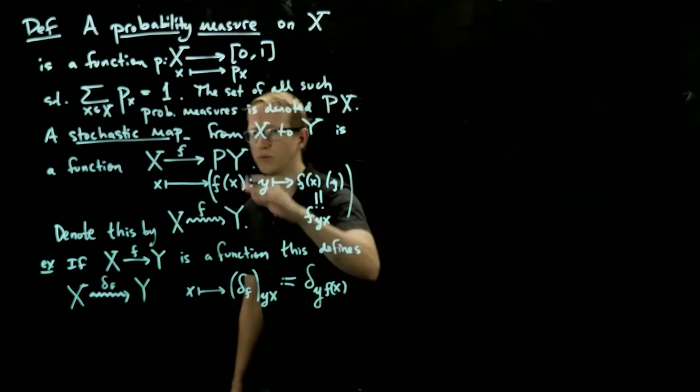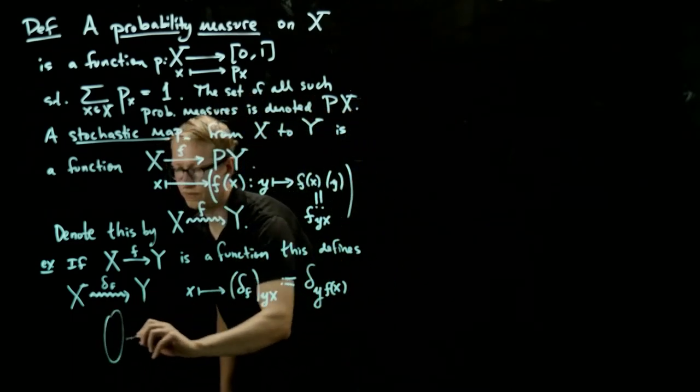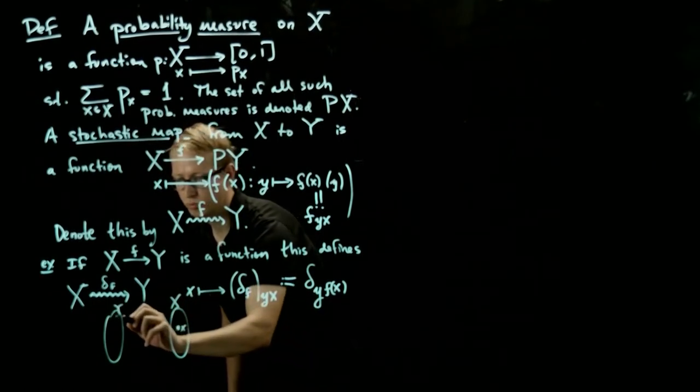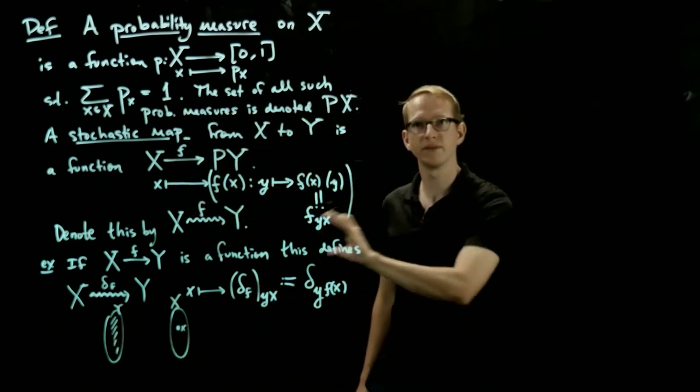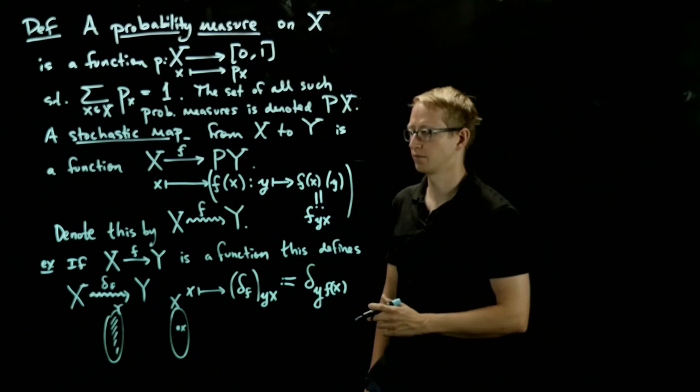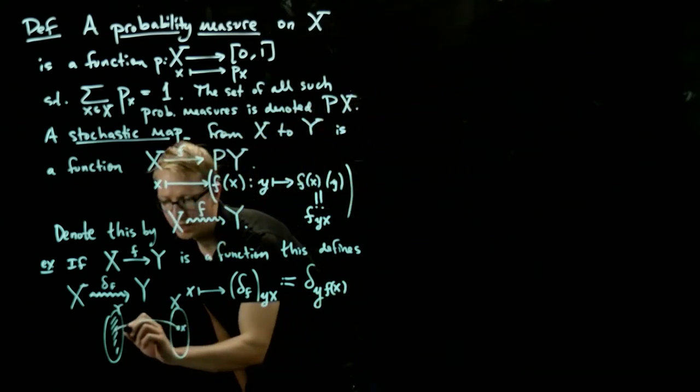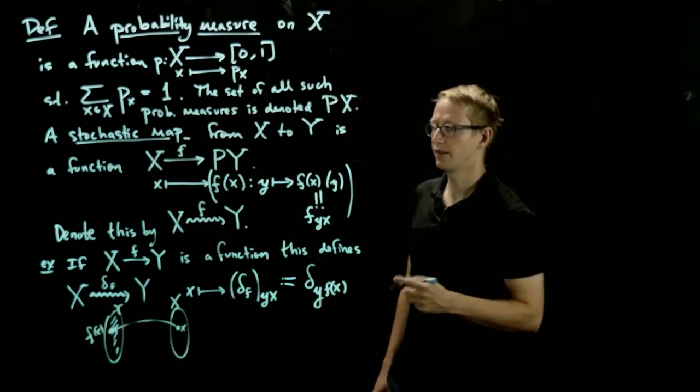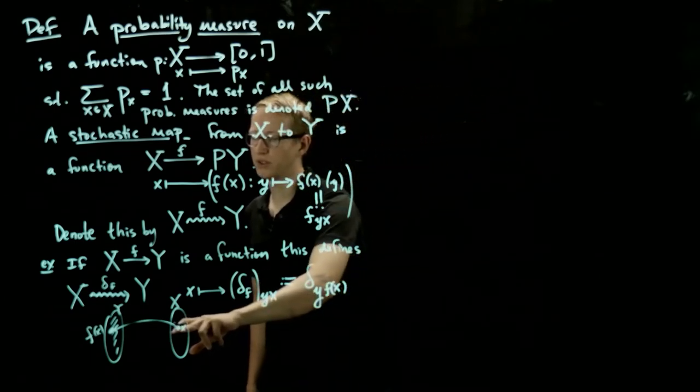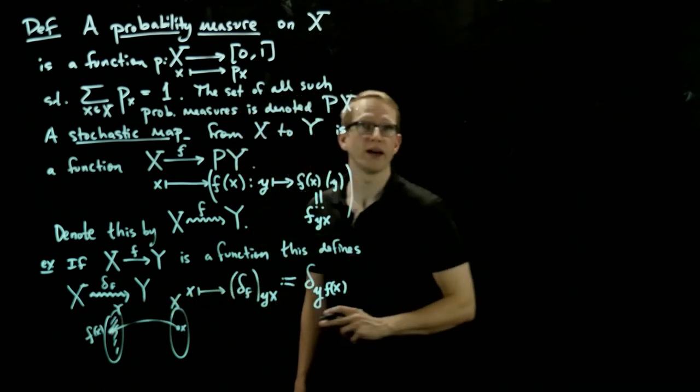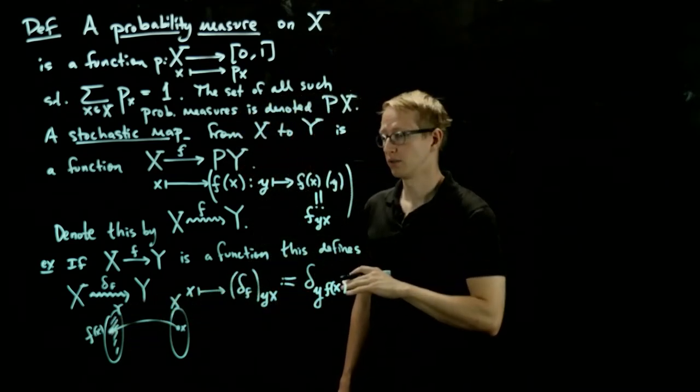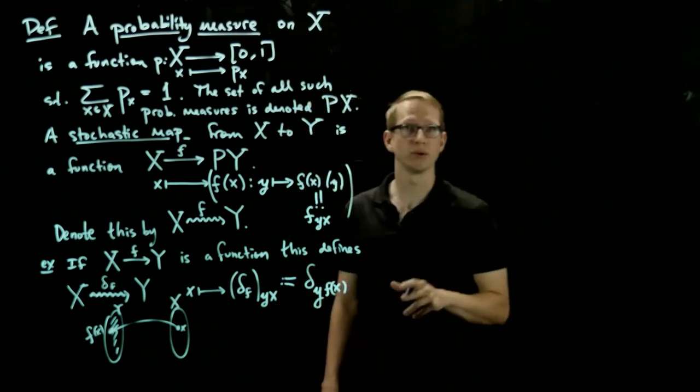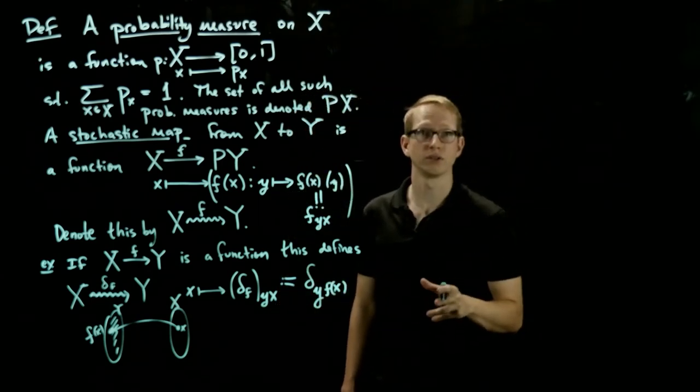So visually, how do I think of something like this? A stochastic map is telling us if we start off in x, then it takes an element in X and spreads that element out over Y by giving us a probability distribution on Y. But if we already have a function, then we know where that element x goes. It goes to a specific element, which we call f of x. Therefore, it does give us a probability distribution. That probability distribution is 1 when evaluated at f of x and 0 everywhere else. So I think of this as a deterministic process in some sense, because we know, given an input, we know exactly what the output will be with 100% probability.